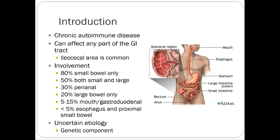Crohn's is an autoimmune disease that can affect any part of the GI tract. The ileocecal area is the most common site of involvement. We don't really know exactly what causes Crohn's — just like a lot of autoimmune diseases, we don't know for sure what causes people to get them, but there's likely a genetic component of some sort.